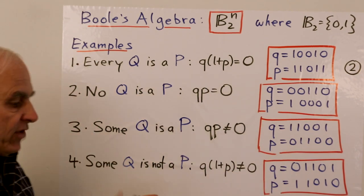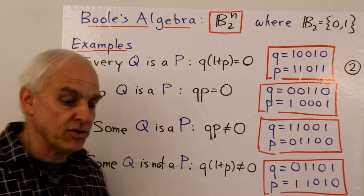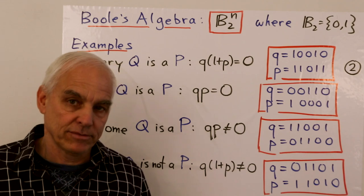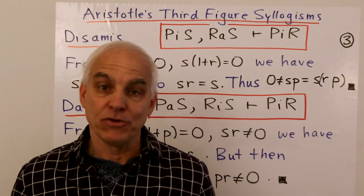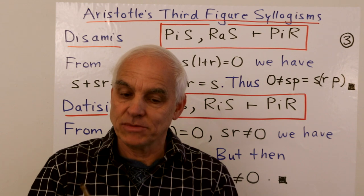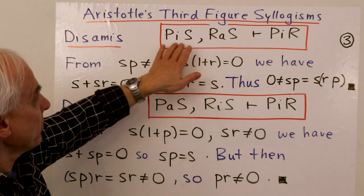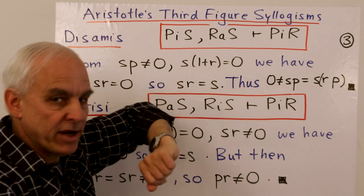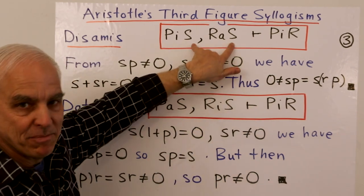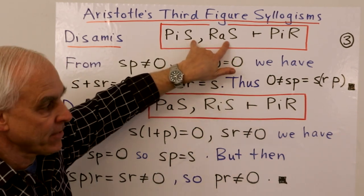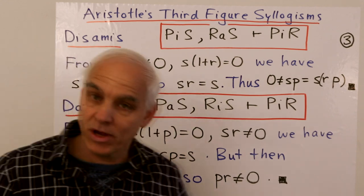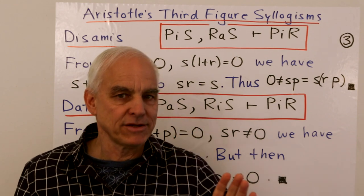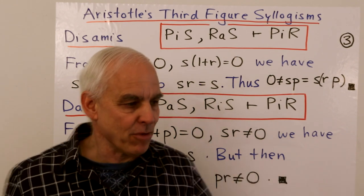Boole then converts the Aristotelian syllogisms into just algebraic computations or deductions. Now let's have a look at Aristotle's third figure syllogisms. These are syllogisms that involve a common predicate in the second spot in both of the premises. There are six of them listed in Wikipedia, and we're going to go through them. The first two, however, are a little bit more complicated, so we're going to leave them aside for the moment and start with Dissimists.